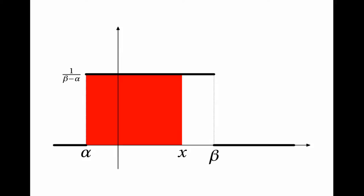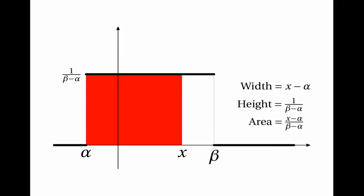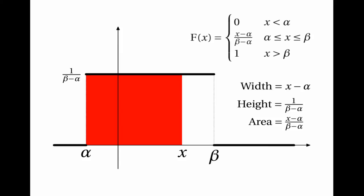The next thing you need to understand is the cumulative distribution function for a random variable with the continuous uniform distribution. The cumulative distribution function tells you the cumulative probability, which is the area under the graph. So F(x) is simply the area under the probability density function up to x — the width is x minus alpha and the height is 1 over beta minus alpha, giving area x minus alpha over beta minus alpha. Therefore the CDF is: F(x) = 0 when x is less than alpha, x minus alpha over beta minus alpha when x is between alpha and beta, and 1 when x is greater than beta.